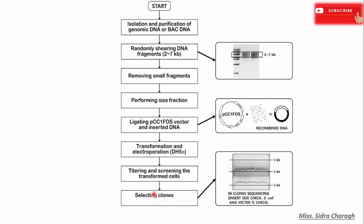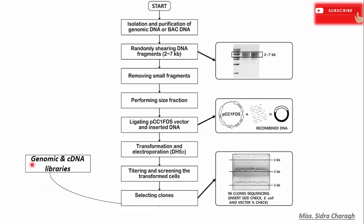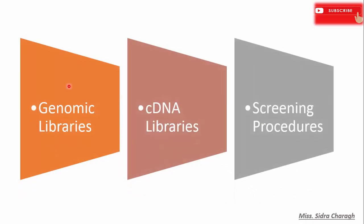After selecting clones, we design genomic libraries or cDNA libraries, and then we do screening. There are actually two types of libraries: genomic libraries and cDNA libraries. After constructing genomic or cDNA libraries, we perform screening.